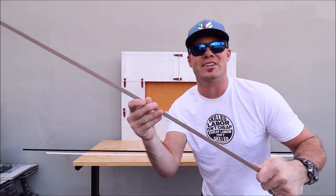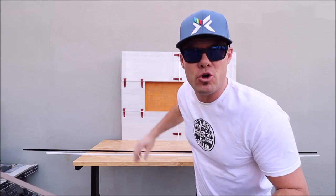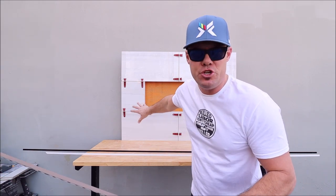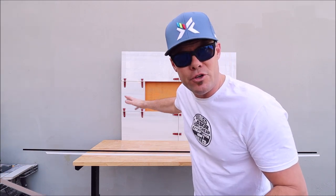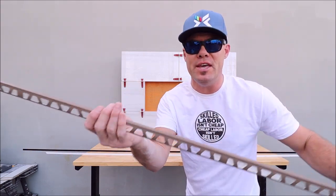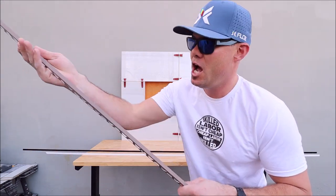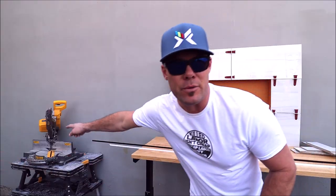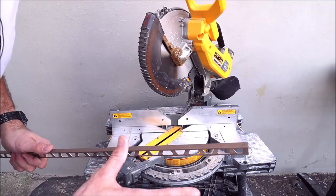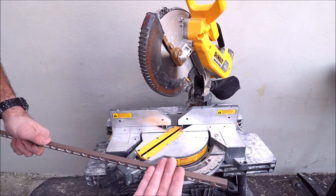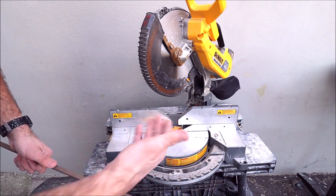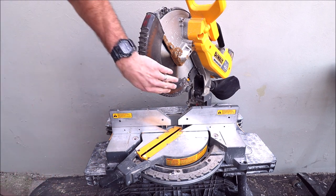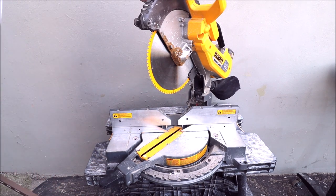Trimming out your niche or your window with contrasting trim really brings out the niche, which is the focal point. It draws your eye to the jewelry of your shower. So, we are going to use this contrasting Schluter Jolly and trim out this mocked-up niche right here. There are numerous ways of cutting this Schluter trim edging. We use a 12-inch compound miter saw with an 80-tooth DeWalt trim blade.